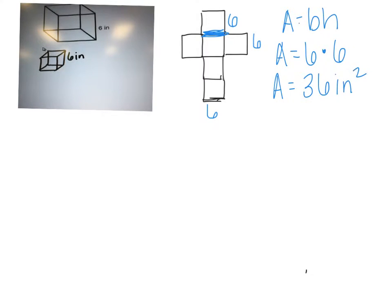What's the area of one of the squares? 36 inches squared. That's one area. So how many squares do we have? Six. Do we have to find the area of each one individually? No, what's a shortcut we can take if we know they're all the same? We can multiply this times how many squares we have.